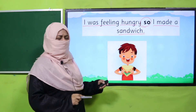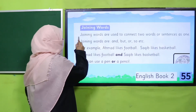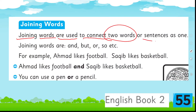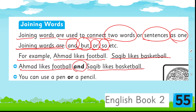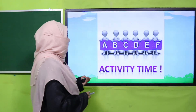Let's see what your book says about it. Joining words are used to connect two words or sentences as one. The joining words you are going to learn today are: and, but, or, and so — these four only. For example: 'Ahmad likes football and soccer.' Or: 'You can use a pen or a pencil' — 'or' because you can choose one. Now you know where to use 'and,' 'or,' 'but,' and 'so.'